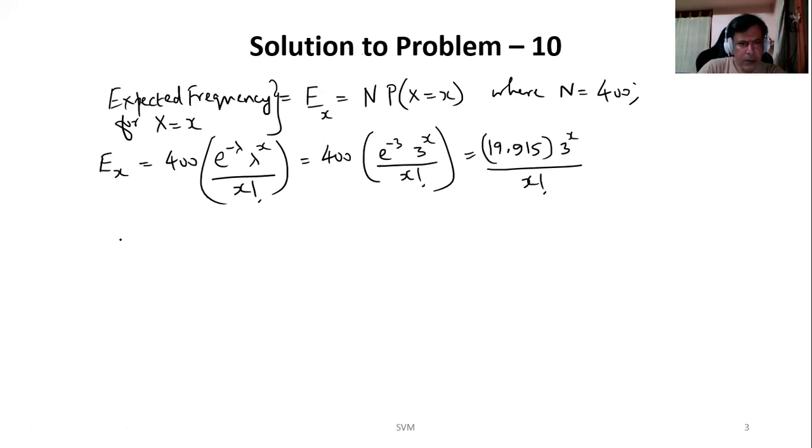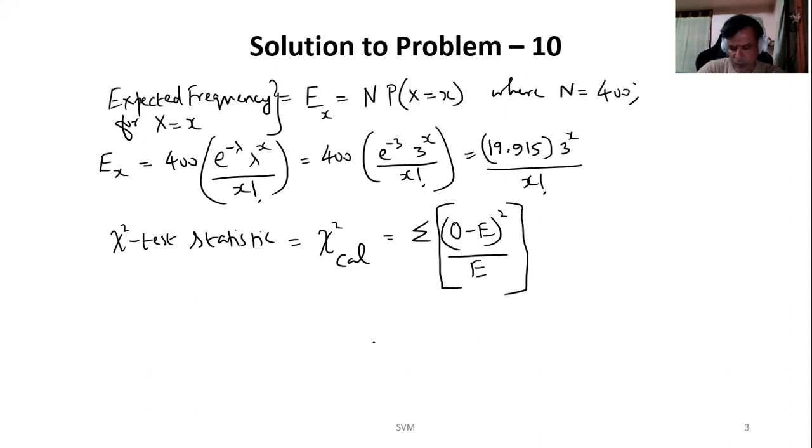Now this chi square test statistic will be chi square cal, which is summation (O minus E) square divided by E. So this we need to evaluate.